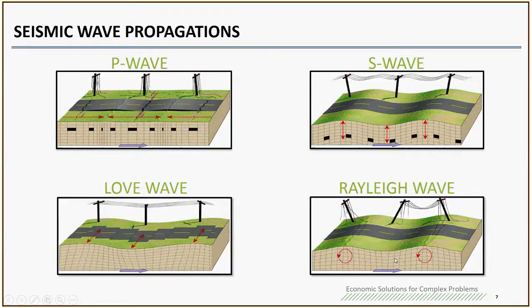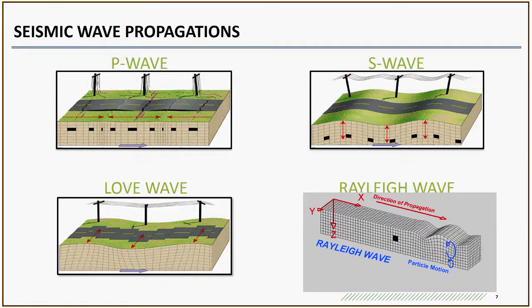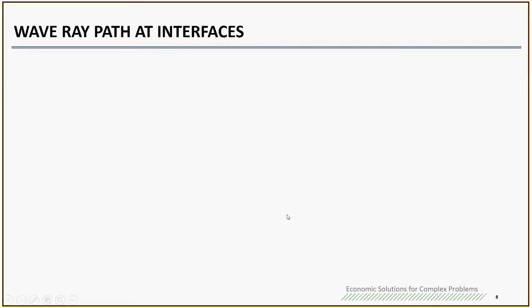This surface wave is quite important because right now people can directly measure the surface wave, the Rayleigh wave. Then through some equation, there is correlation between the S wave and the Rayleigh wave. Once you measure the Rayleigh wave, you can indirectly calculate the S wave.